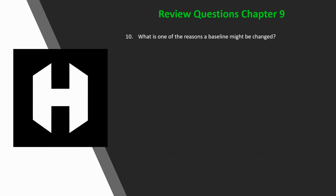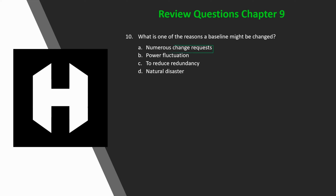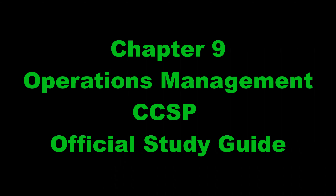Question ten: What is one of the reasons a baseline might be changed? A. Because of numerous change requests, B. Power inflections, C. To reduce redundancy, or D. Because of natural disasters? If you said A, numerous change requests, you would be correct. And that does it for the overview of the exam essentials and review questions for Chapter 9, Operations Management.